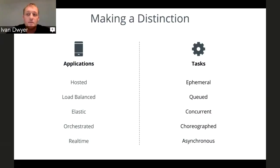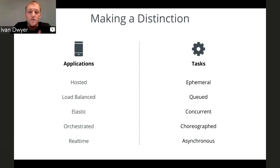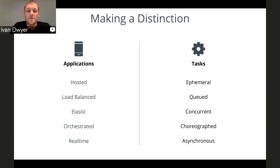Before I get into the actual pattern, I want to make a distinction between applications and tasks so we understand why there's a need for a different type of platform environment for this work. On the application side, they're hosted and have to be highly available. Traffic is distributed by load balancers, and capacity is adjusted by adding instances — the elastic promise of the cloud. Tasks, on the other hand, only need the runtime available for the duration of the process itself.